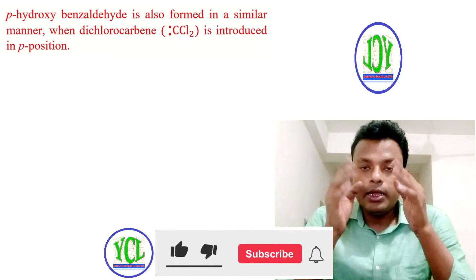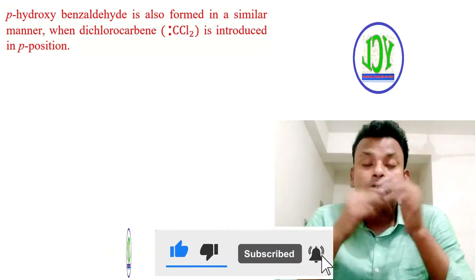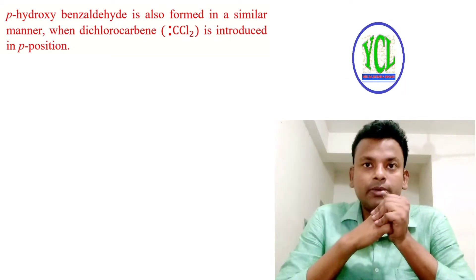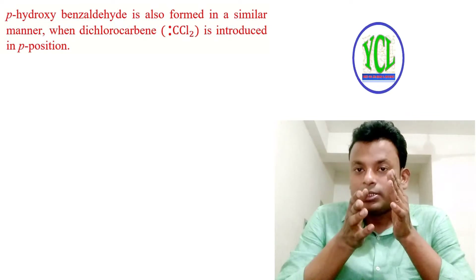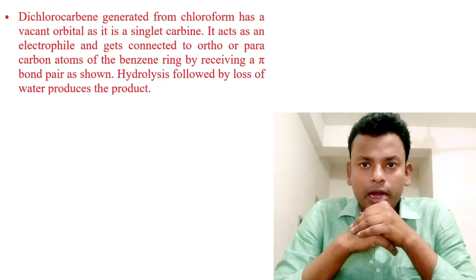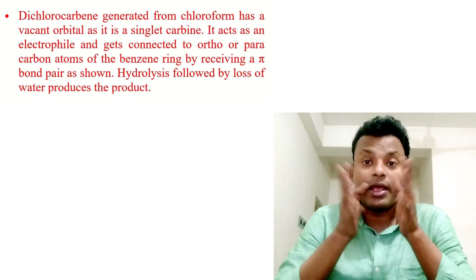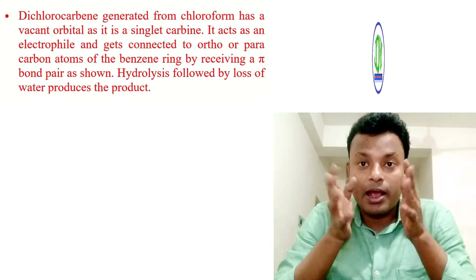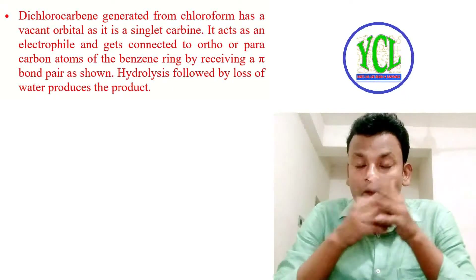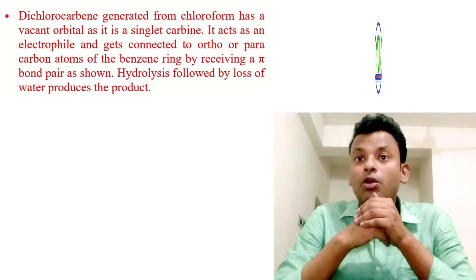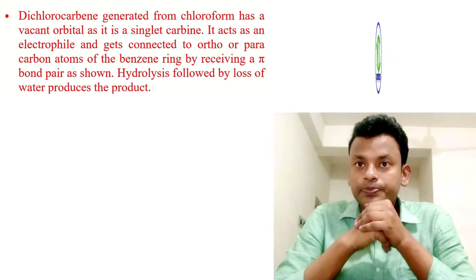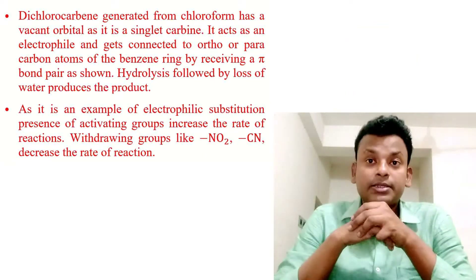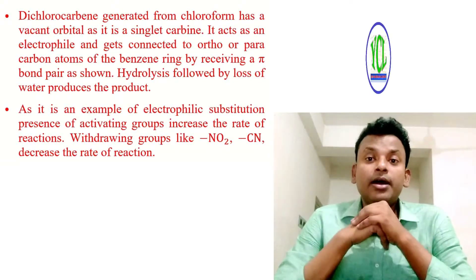Para-hydroxybenzaldehyde is also formed in a similar manner when dichlorocarbene is introduced at the para position. When dichlorocarbene attacks the ortho position it gives ortho-hydroxybenzaldehyde, and when at the para position it gives para-hydroxybenzaldehyde. Dichlorocarbene, generated from chloroform, has a vacant p orbital; as a singlet carbene it acts as an electrophile and connects to the ortho and para carbon atoms of the benzene ring. As this is an electrophilic substitution, activating groups increase the rate of reaction while withdrawing groups like NO2 and CN decrease the rate.